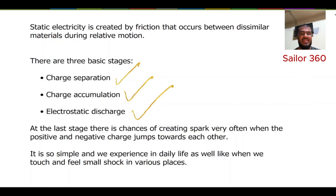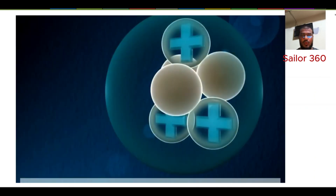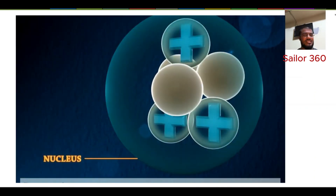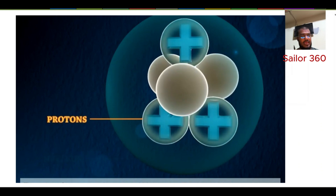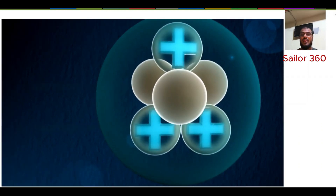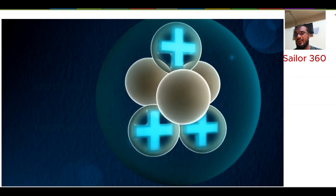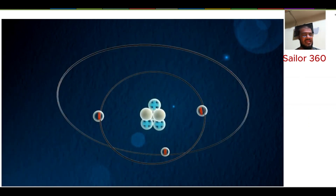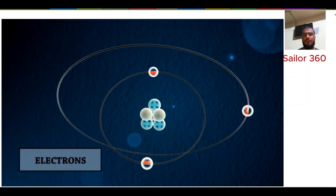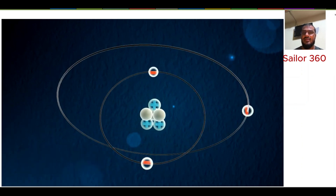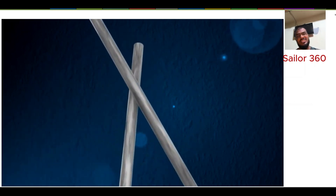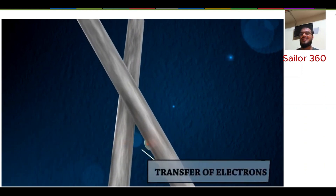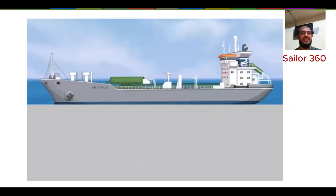We need to understand how this charge can be separated from a material. The atom is the core part of any material. An atom looks like a small ball where the nucleus or center has a positive charge, and around it there is a negative charge called electrons. These electrons float around the center or nucleus.